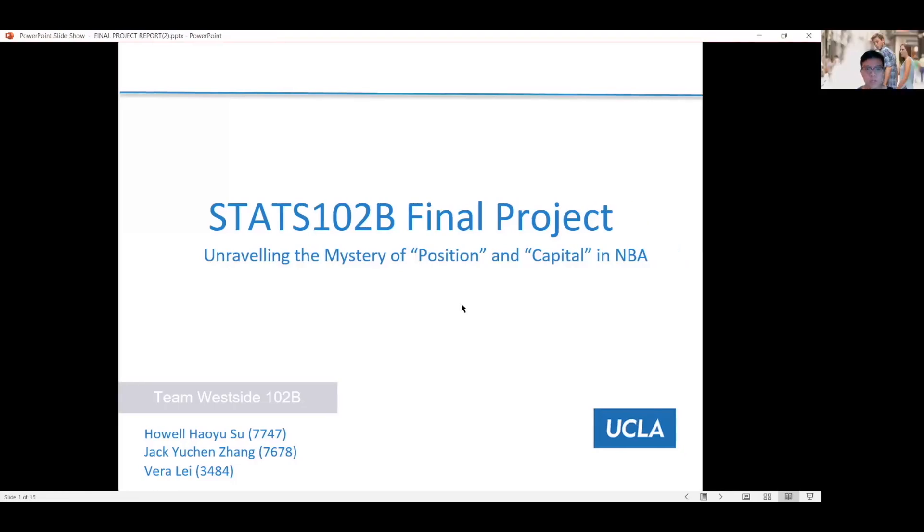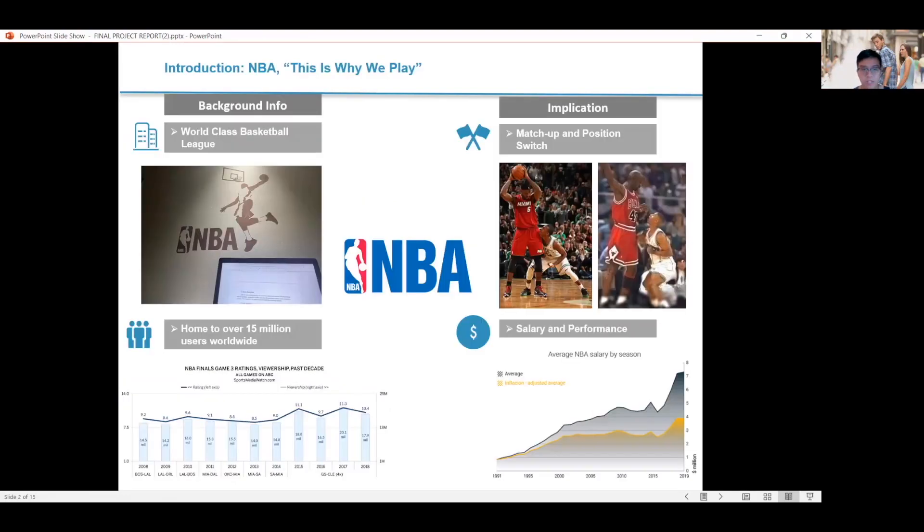Hello, everyone. This is team Westside102b, and we are trying to unravel the mystery of position and capital in the NBA for this final project. So first of all, the NBA is a world-class basketball league. And as you can see from this picture, I actually have the NBA poster up when I'm writing this report. And it is home to over 15 million viewers worldwide. And I'm going to use a ripoff of the NBA slogan, This is Why We Play, to introduce you why we are playing with the NBA dataset.